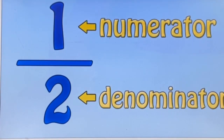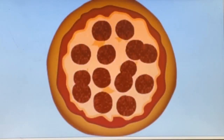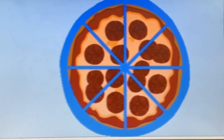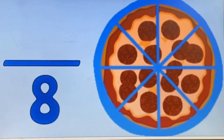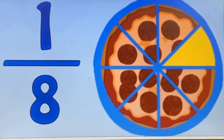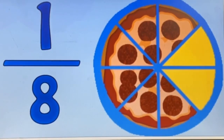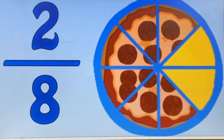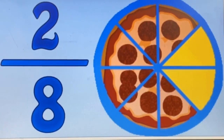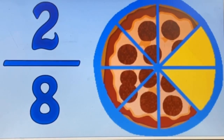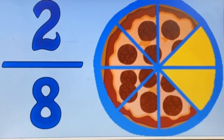The top number is called the numerator — it shows how many parts of the denominator you are looking for. For example, a pizza is usually divided into eight slices, so the denominator would be eight. If you normally eat one slice of pizza, then one would be the numerator, meaning you eat one eighth of a pizza. If you eat two slices, the numerator is two and the denominator is still eight, so you eat two eighths of a pizza.